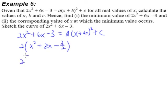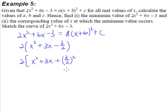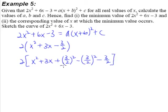The next step is to look at the coefficient of x, which in our case is 3. So we'll add (3 divided by 2) squared. But we know we cannot just add any term we like, so we have to subtract the same term so that we don't change anything at all. We've added something and subtracted the same thing, so basically there is no net effect.